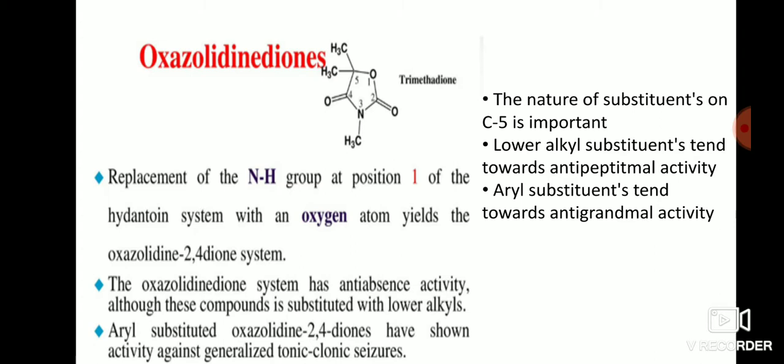The oxazolidinedione system has anticonvulsant activity, although this requires substitution with lower alkyl groups — lower alkyl groups produce good effect, while low or higher alkyl groups reduce activity. 3-substituted oxazolidine-2,4-diones have shown activity against generalized tonic-clonic seizures. Low alkyl substitution on C5 tends toward anti-petit mal activity, while 3-substituted oxazolidinediones tend toward anti-grand mal activity.